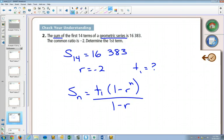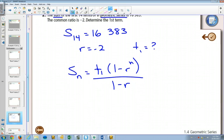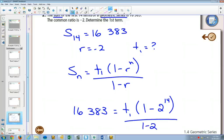If we look at this and put information in, we put in 16,383 for Sn, that means we're talking about the 14th sum. So wherever there's an n on this side, we're going to put a 14. Term 1 is what we want to find, and then 1 minus r. Oh yes, thank you, it's negative 2.